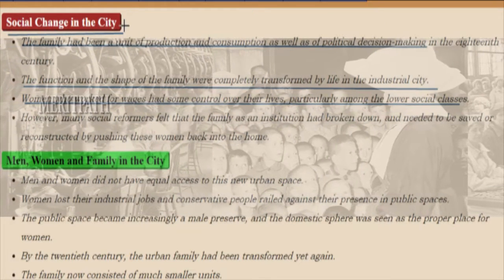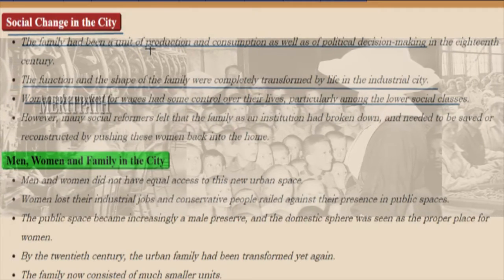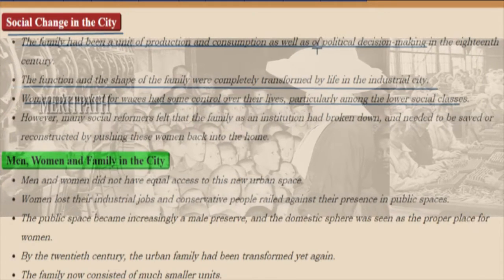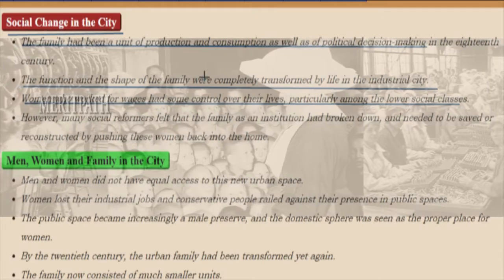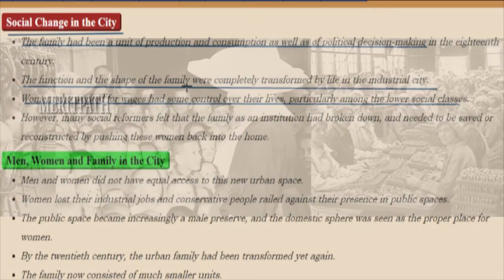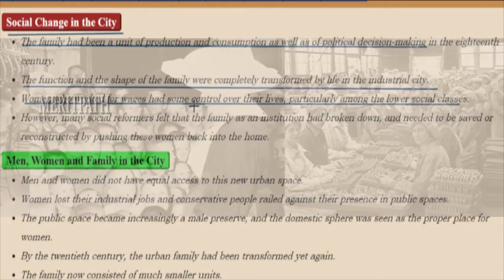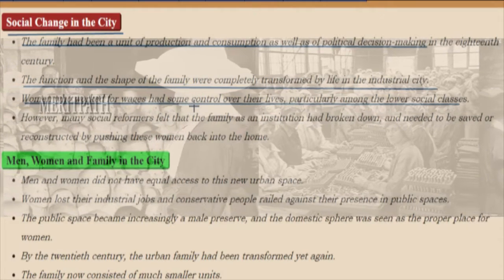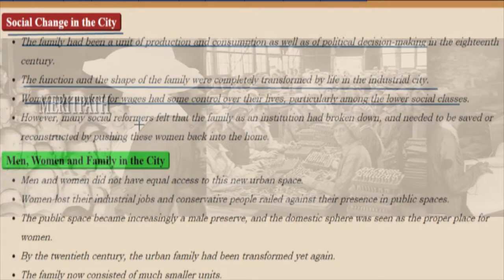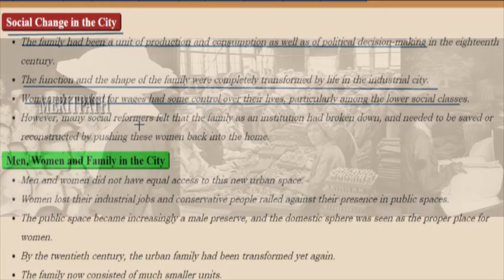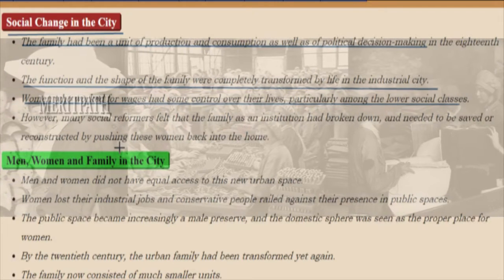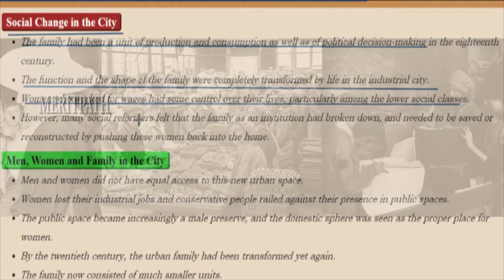Social change in the city: the family had been a unit of production and consumption, as well as of political decision-making, in the 18th century. The function and shape of the family were completely transformed by life in the industrial city. Women who worked for wages had some control over their lives, particularly among the lower social classes. However, many social reformers felt that the family as an institution had broken down and needed to be saved by pushing women back into the home.